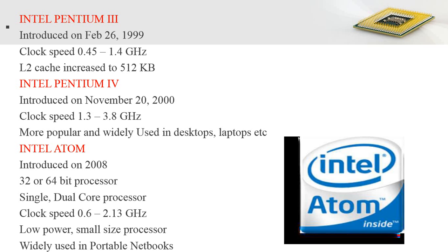In 1999, Intel introduced the Pentium 3 with a clock speed of 0.45 to 1.4 GHz and an L2 cache size increased to 512 KB. The next version, the Pentium 4, was introduced in 2000 with a clock speed of 1.3 to 3.8 GHz, and was widely used in desktop and laptop systems.